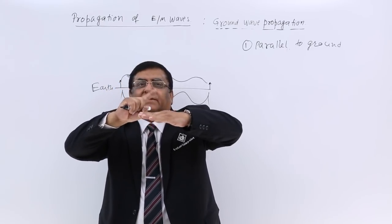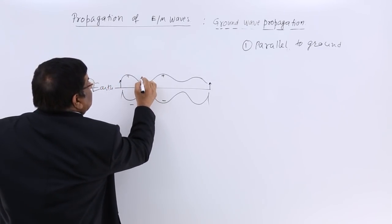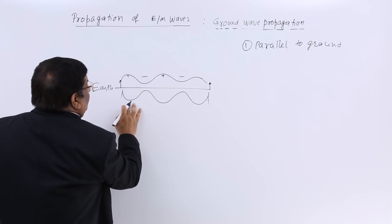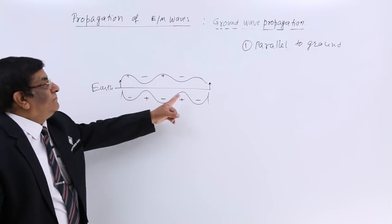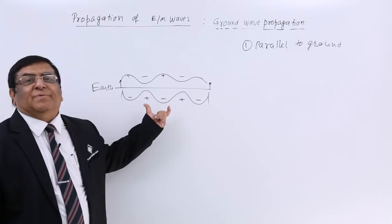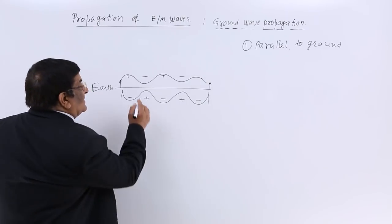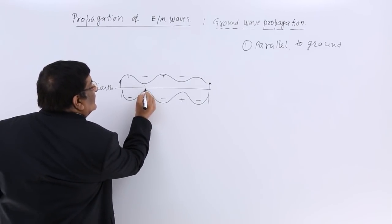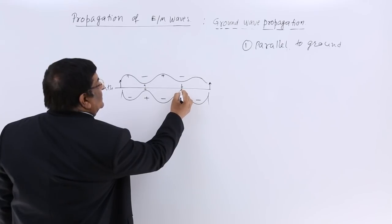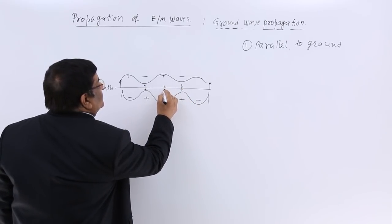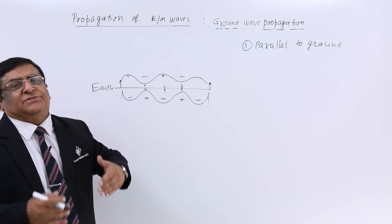Once we have plus and minus alternating in the wave above the earth, we have minus and plus induced in the earth below. What happens with this is that there are always chances that the plus and the minus will short circuit to some extent. There is always a certain leakage of energy because of this short circuiting.